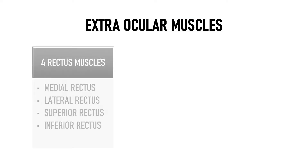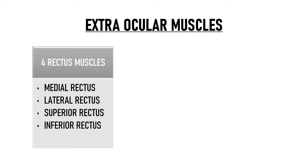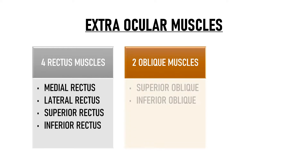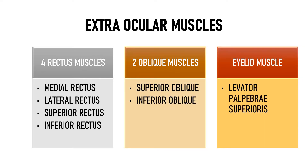Each eye contains 4 rectus muscles — the medial rectus, lateral rectus, superior rectus and inferior rectus — 2 oblique muscles — superior oblique and inferior oblique — and 1 muscle of the eyelid which is the levator palpebrae superioris. In this video we will restrict ourselves to the other 6 extraocular muscles that are responsible for the movement of the eye.